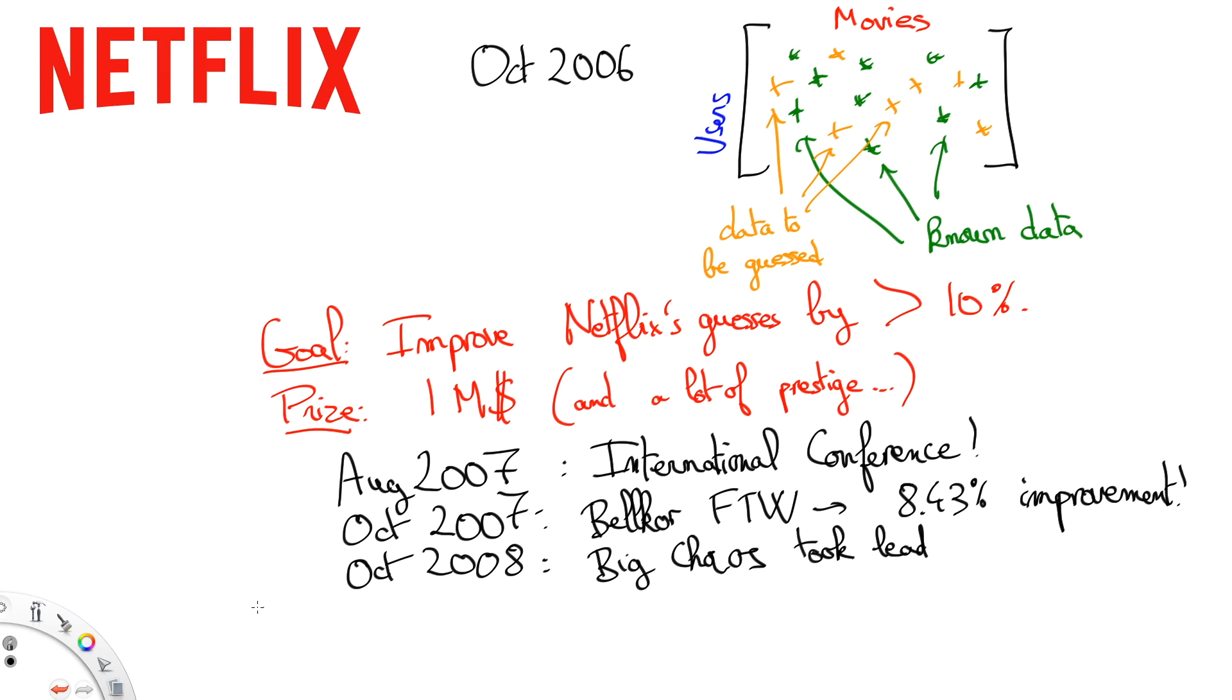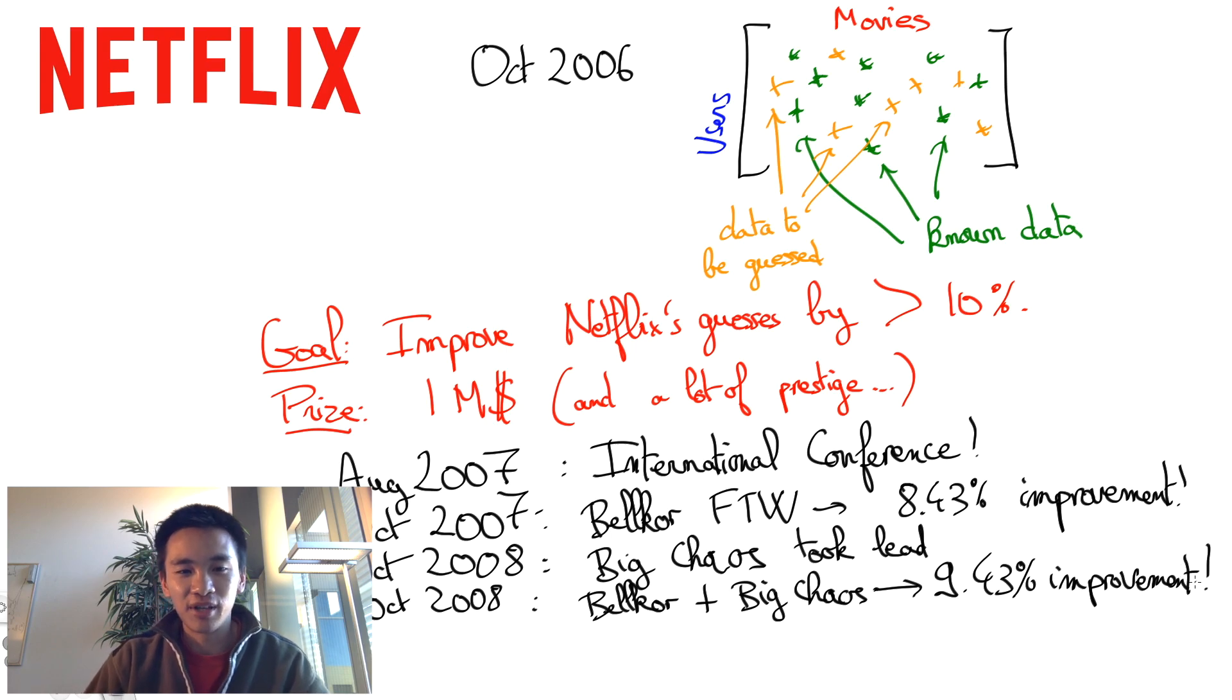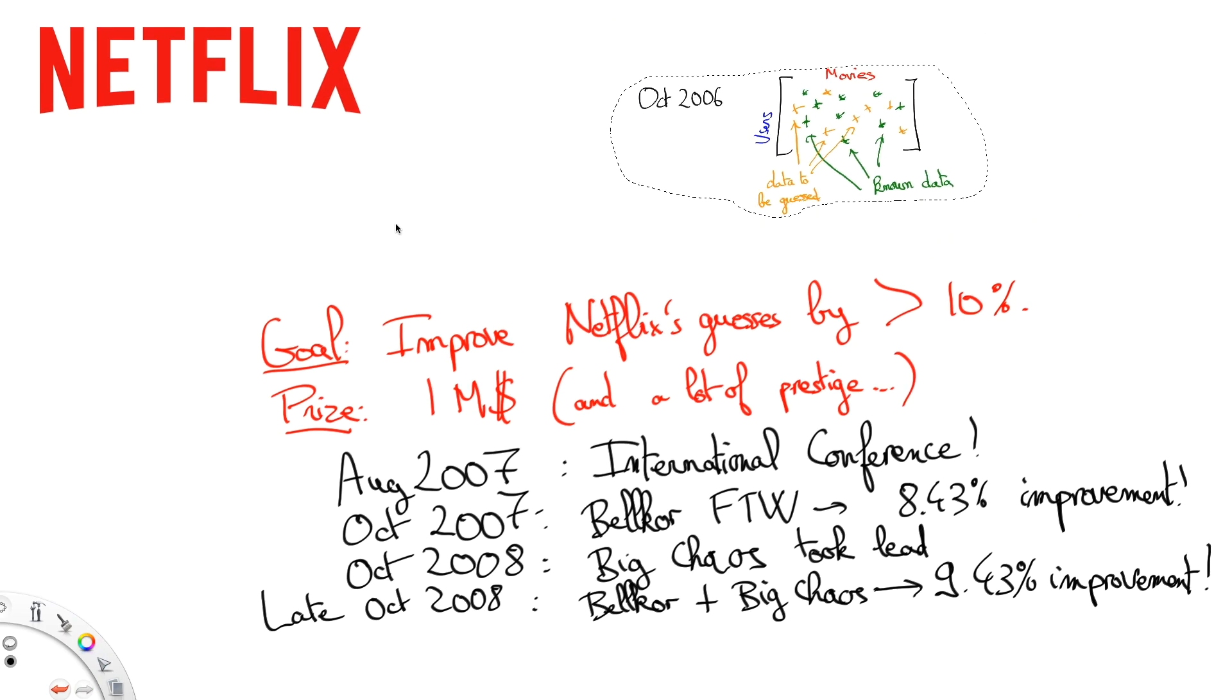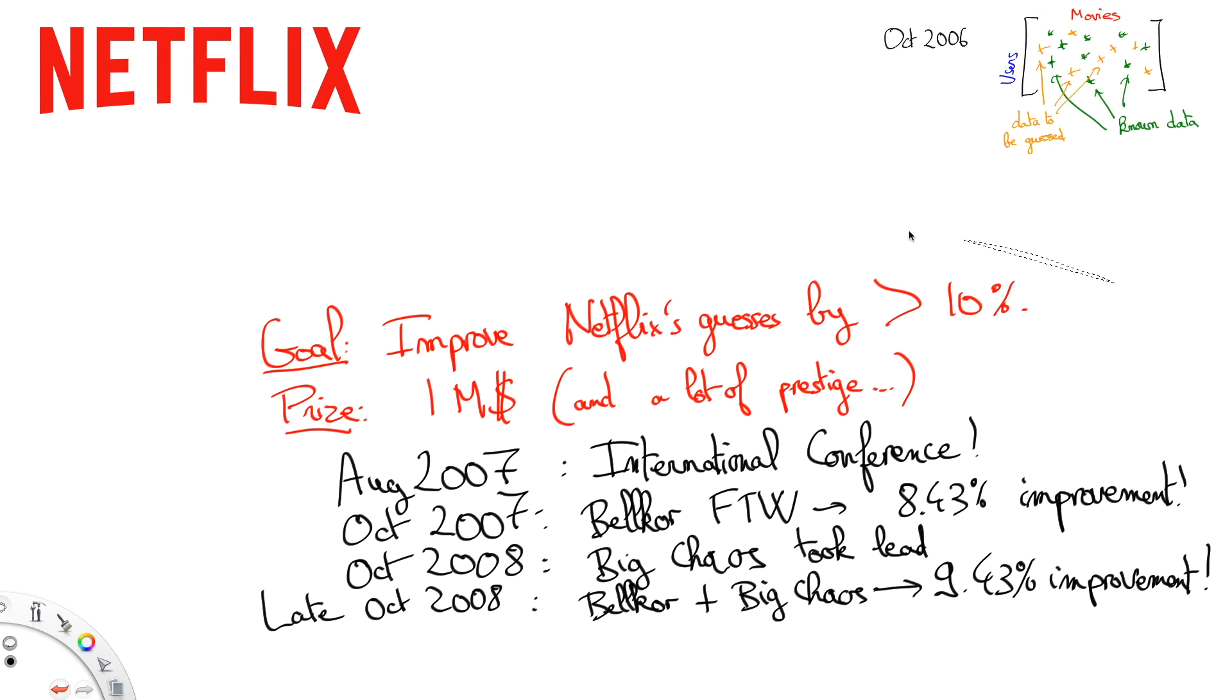in October 2008, Big Chaos took over the lead. However, rules stipulated that a second-year prize would be awarded only if results had improved by 1% with respect to previous year's results. To reach this threshold, Big Chaos joined forces with Bellcore and achieved a 9.43% improvement upon Netflix's algorithm. That was close! But the second-year prize did get awarded to Big Chaos & Bellcore who donated it to charity.